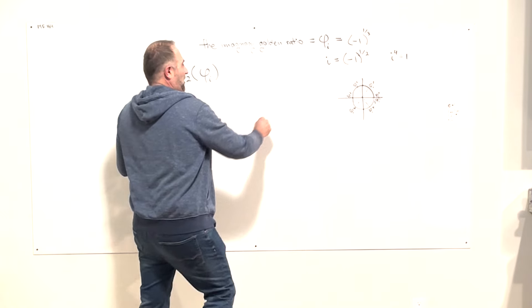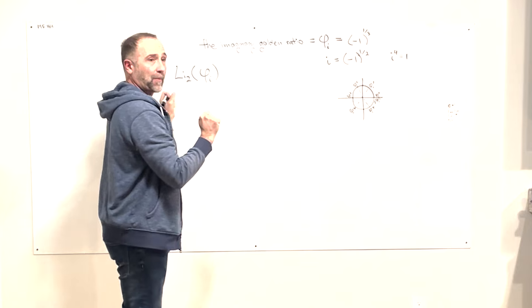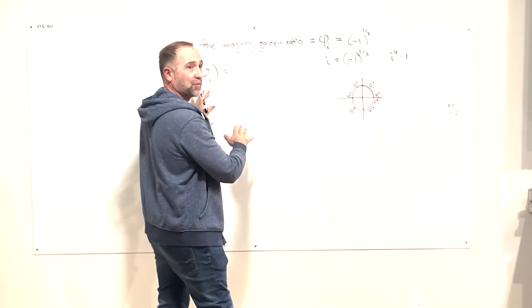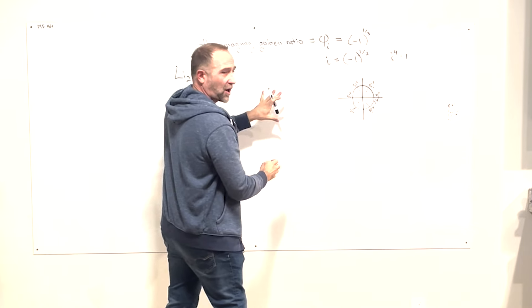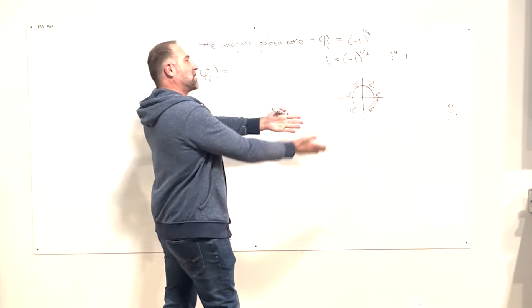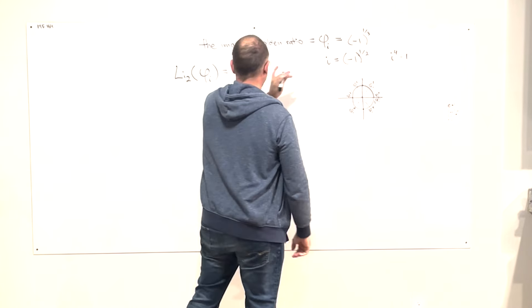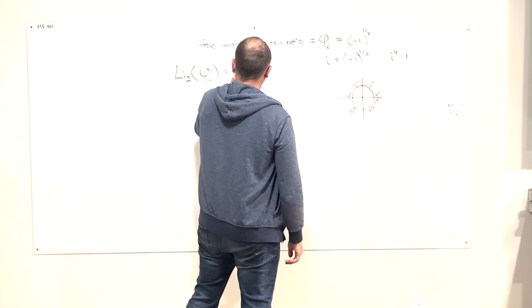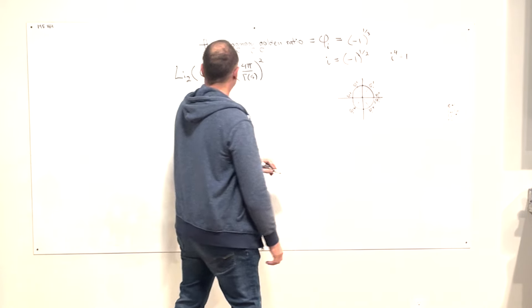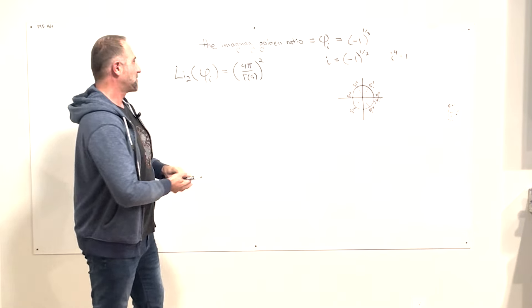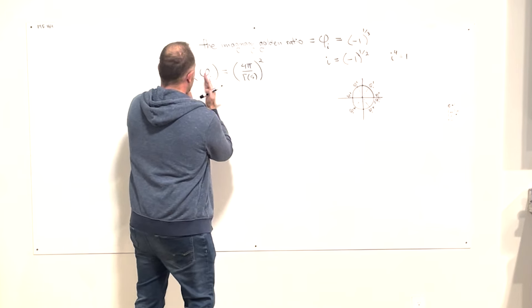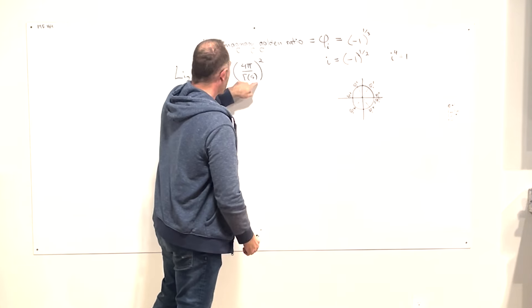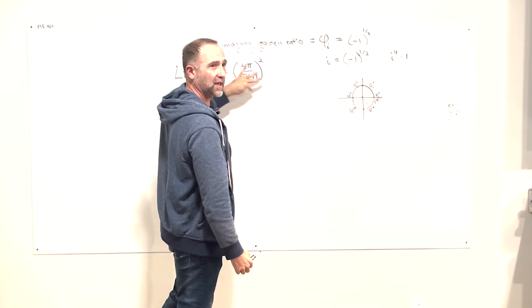Let's build the equation for the hyperbolic figure-eight knot in pieces. Start with the dilogarithm of the imaginary golden ratio — the thing that divides things six ways. The output is a complex two-part number. The real part is equal to 4π divided by Γ(5) squared — a sphere divided hyperbolically five ways, squared.